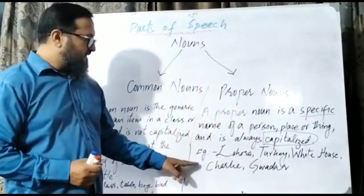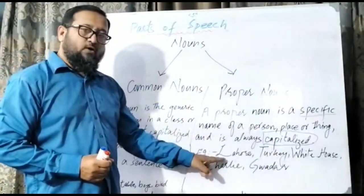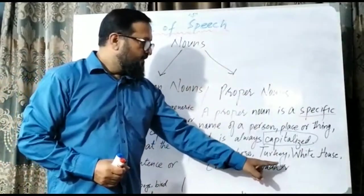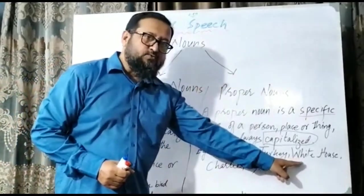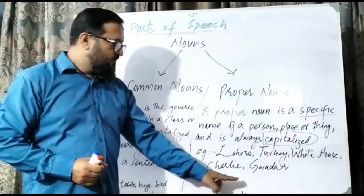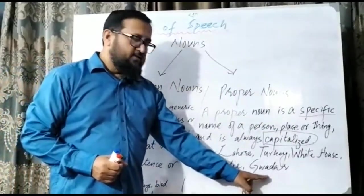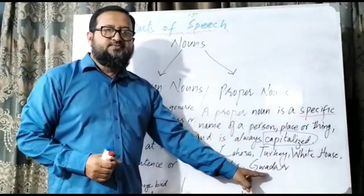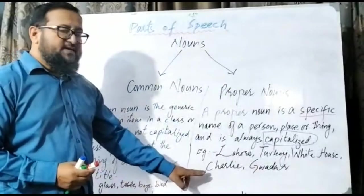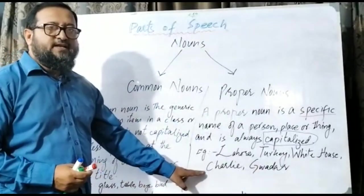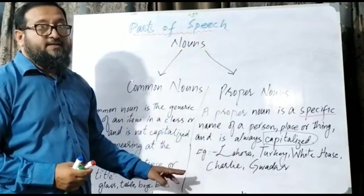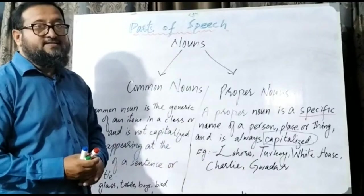Its examples are Lahore, Turkey, White House, Charlie, Duwad. So these words are specific words and must be written in capital letters. You must know that we have to write these letters in capital.